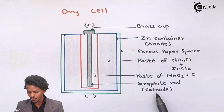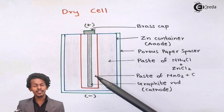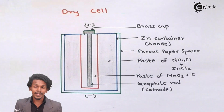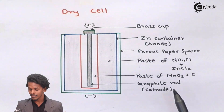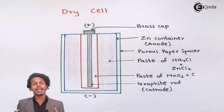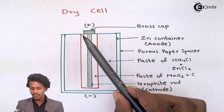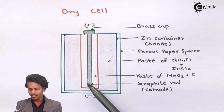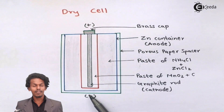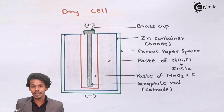This graphite rod acts as the cathode, while the entire zinc container acts as the anode. In this process, hydrogen and ammonia can be released because the reactants NH4Cl and MnO2 react to produce H2O. To prevent the release of H2 and ammonia gas, a brass cap is used — though the brass cap is not the positive electrode; the graphite rod acts as the positive cathode and zinc as the negative anode.